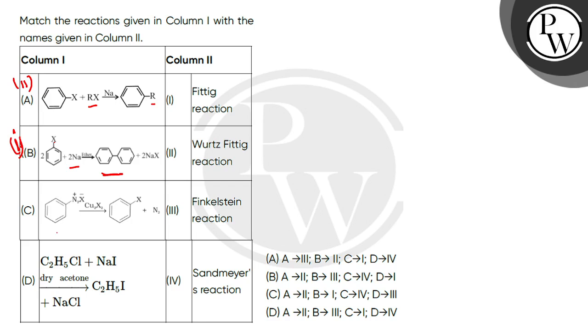In C, let's see the reaction of benzene diazonium chloride with Cu2X2, and X is introduced in place of the diazonium group. This reaction is called Sandmeyer. So C matches with fourth.